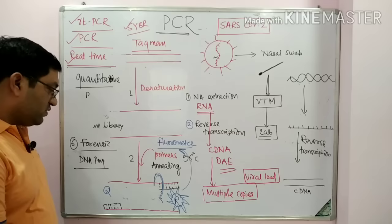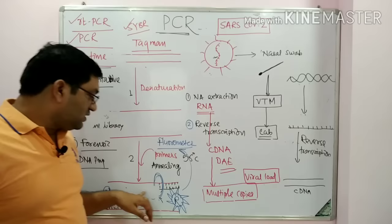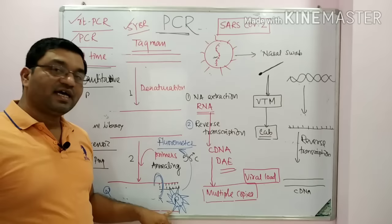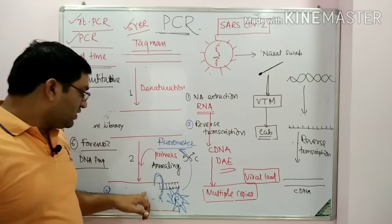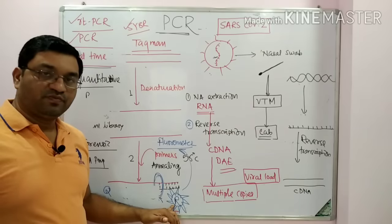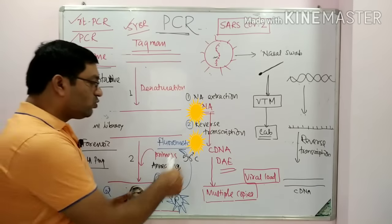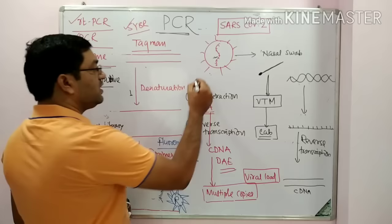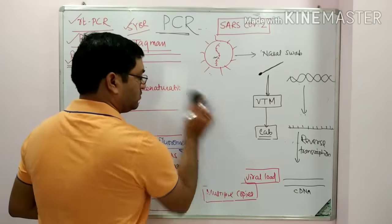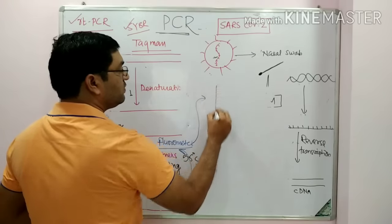With each step and with the increase in DNA molecules, the reporter fluorescent dye signal increases. If from one copy there is synthesis of two DNA molecules, the fluorescent signal also doubles. This is detected by the fluorometer and a graphical display is given on the monitor.